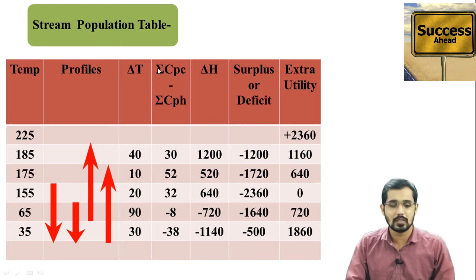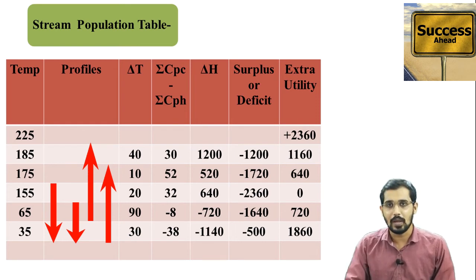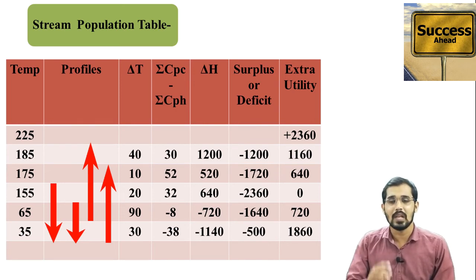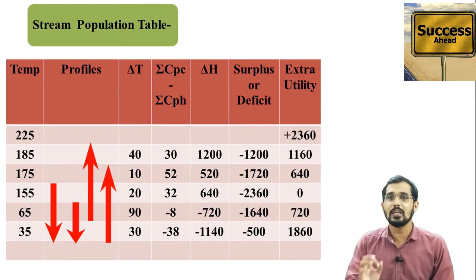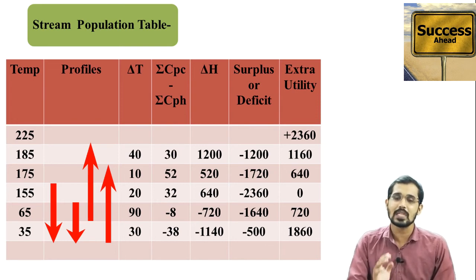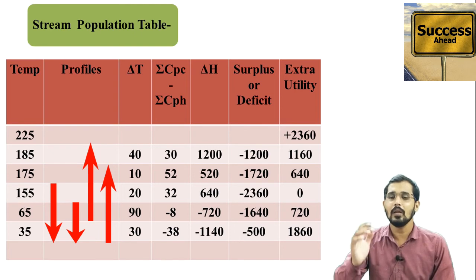In the first column, shifted temperature values are written in decreasing order. After that, temperature profiles are drawn for H1, H2, C1, and C2 streams — and if H3 or H4 streams are available, you can draw those as well. Here, only H1, H2, C1, and C2 were available from the last numerical. After that, we calculated ΔT values using shifted temperature values — for example, 225 − 185 = 40, and similarly all other values.